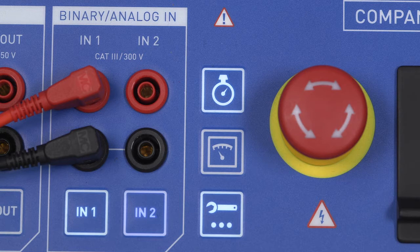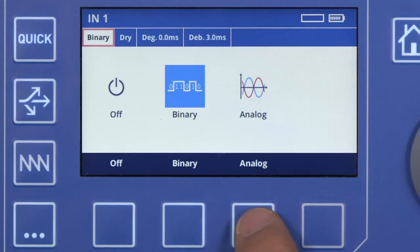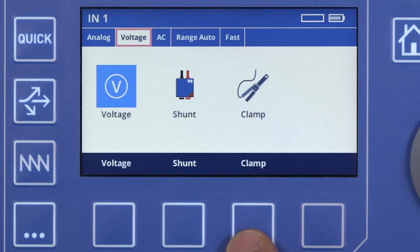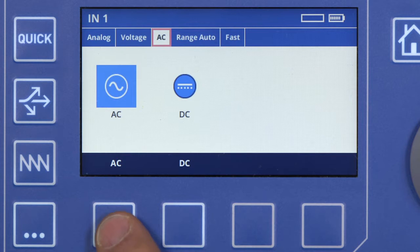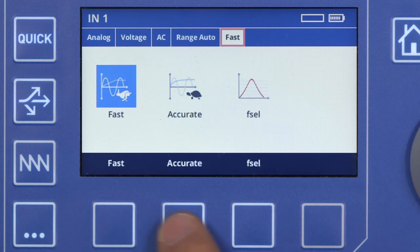Configure N1 as a voltage input by pressing the N1 key and subsequently pressing the Analog, voltage, AC, Auto, and Accurate keys.